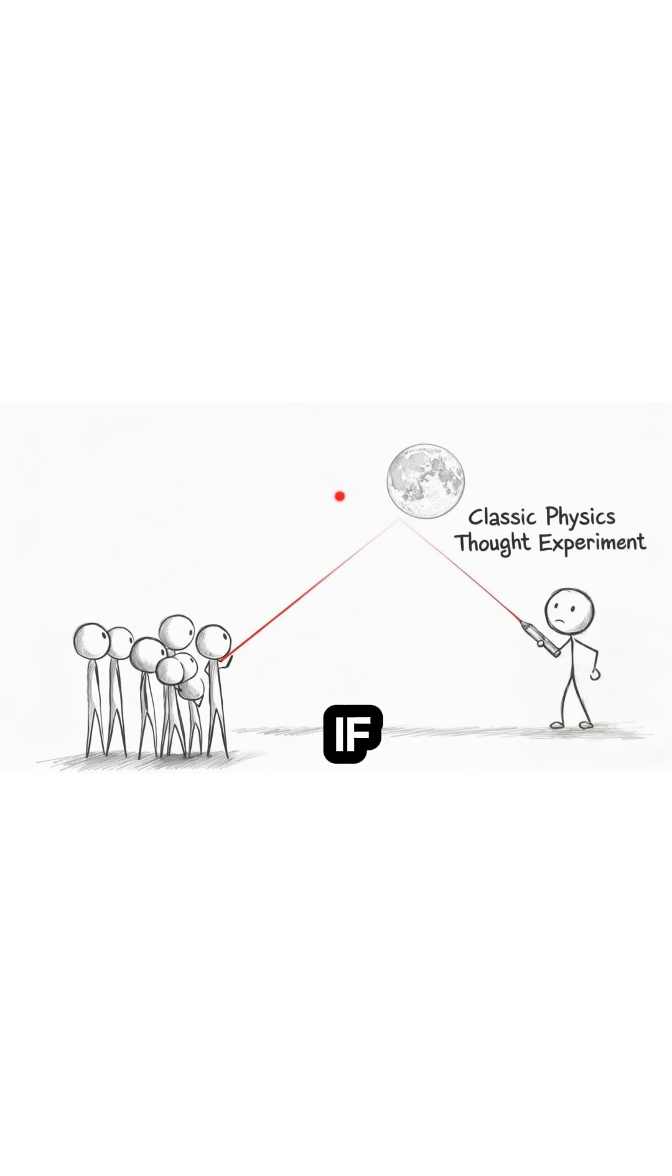The question of what would happen if every person on Earth aimed a laser pointer at the Moon is a classic thought experiment in physics circles, often used to illustrate concepts of power density and collimation.